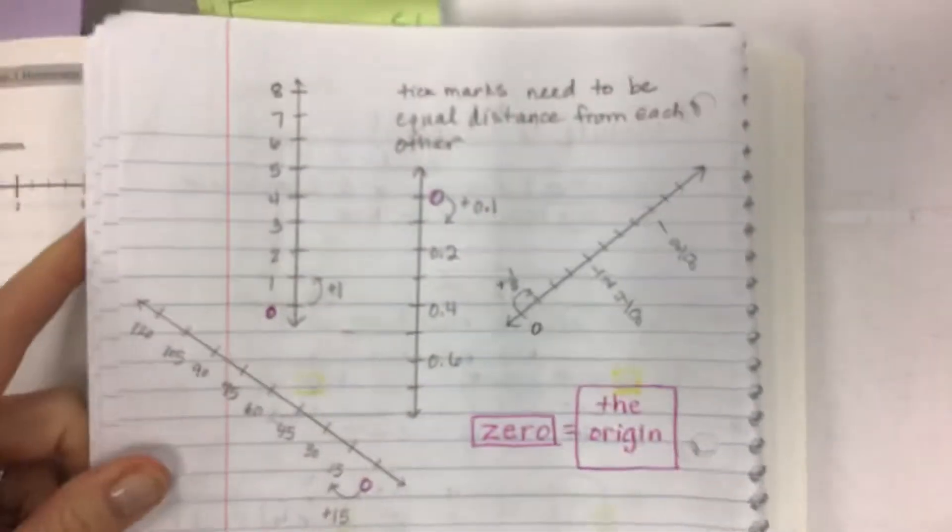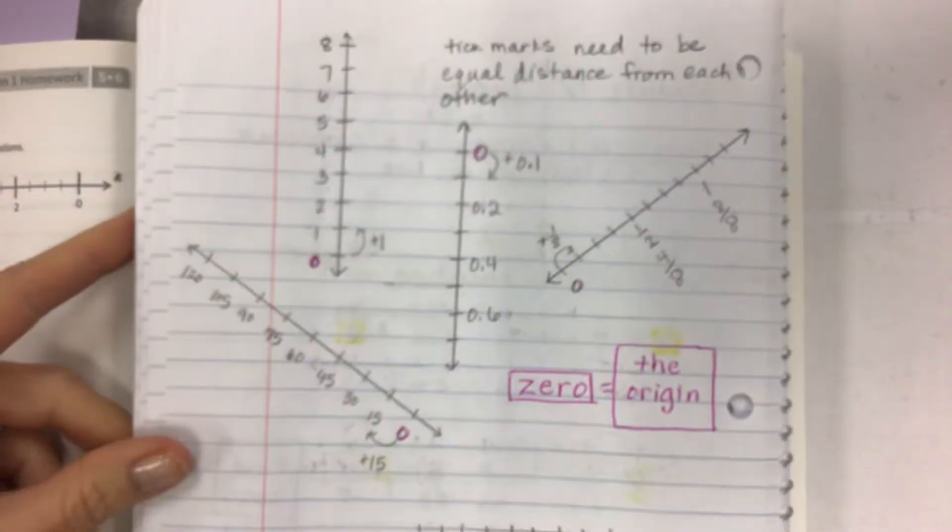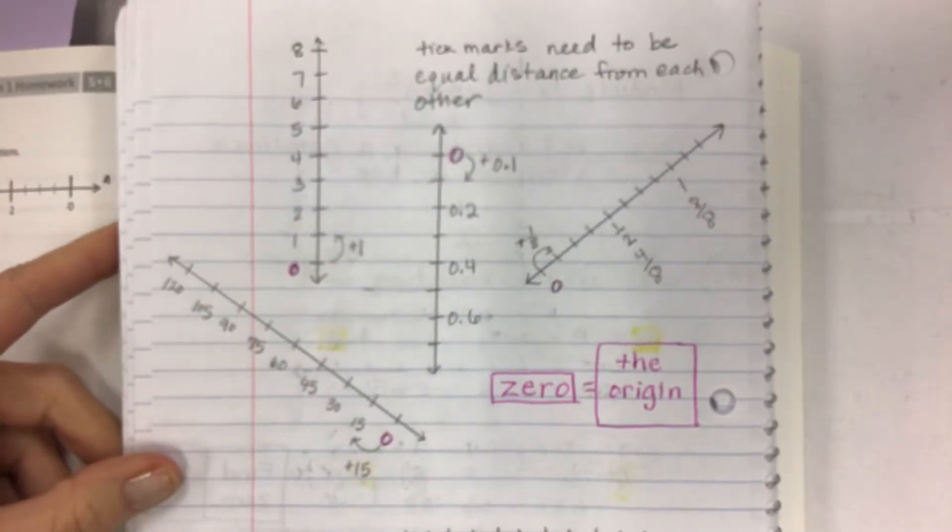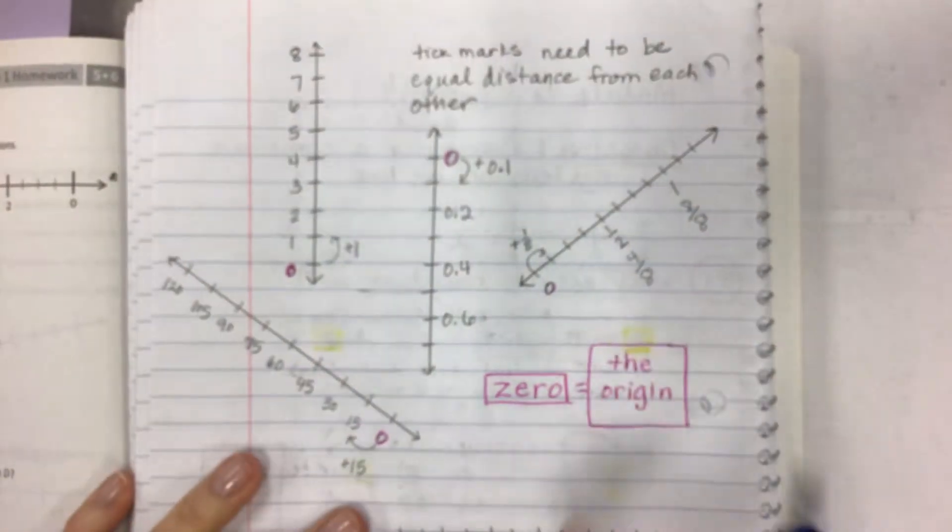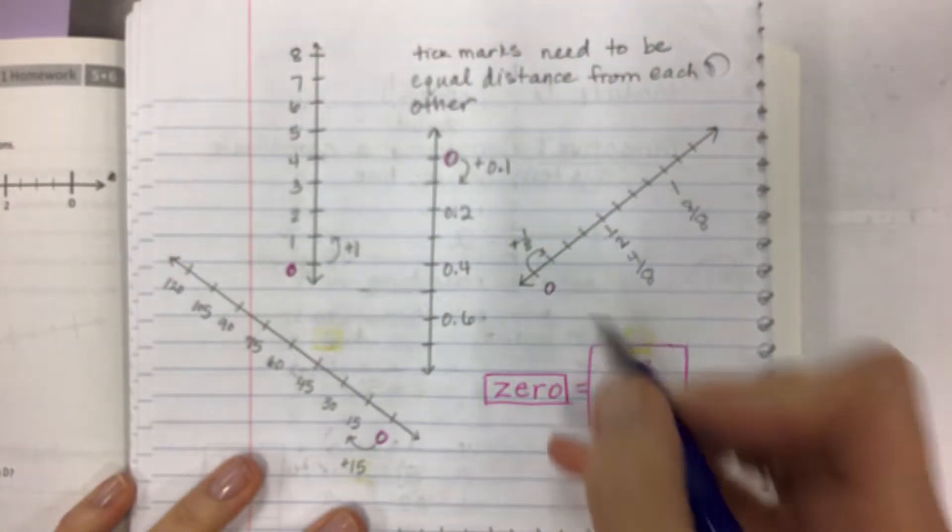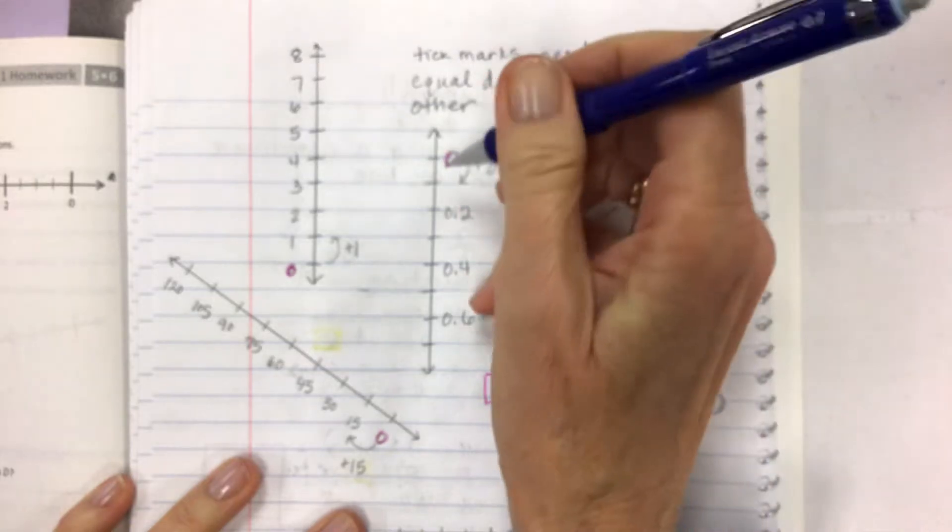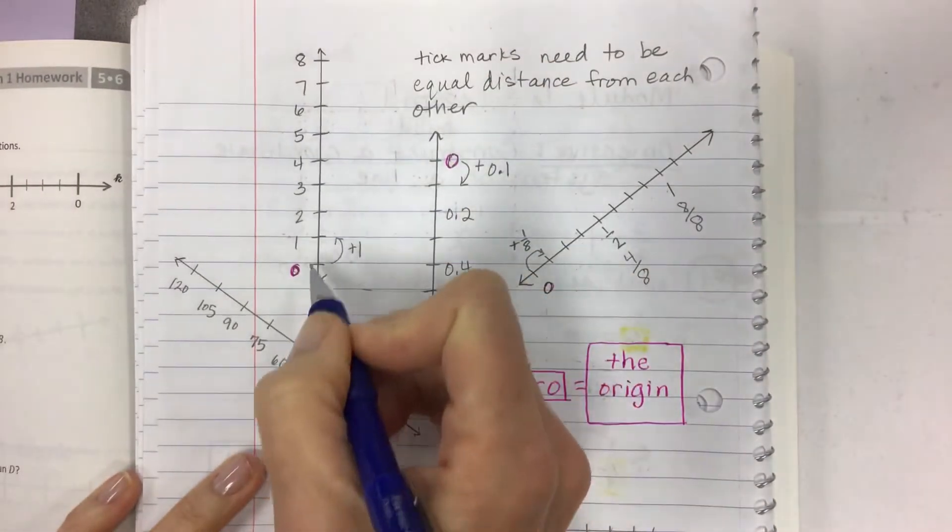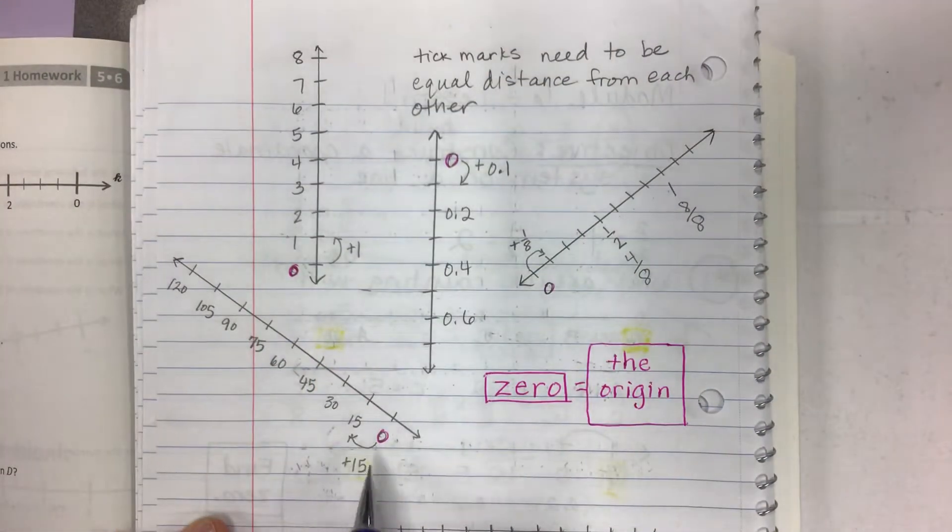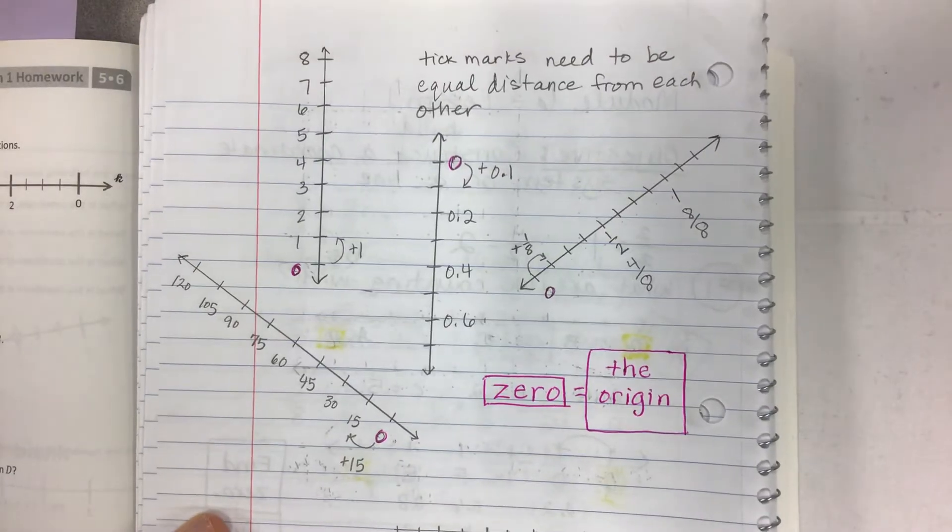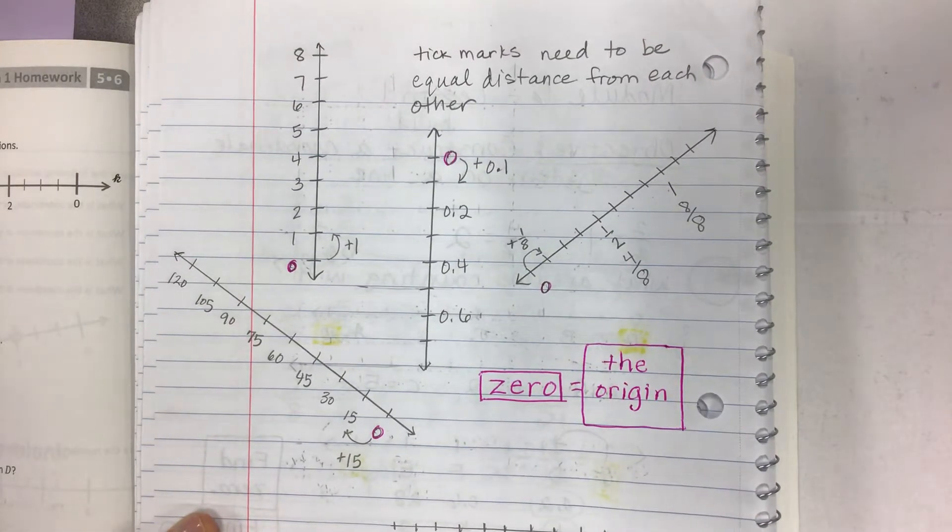And here are some more examples. Remember that zero is the origin. That's going to be where things kind of get started and we can have them going up. It can go down, up, to the left, the right. It does not matter. You just need to figure out which direction the numbers are going.